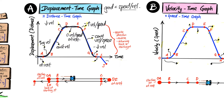From H to I is once again zero gradient, zero velocity, zero speed — the car is at rest again. There is a negative portion here which represents a negative constant velocity because the gradient is consistent and sloping in the negative direction, meaning the car is going in the opposite direction. The sign here indicates direction, not just speed.